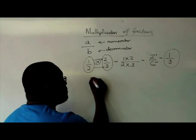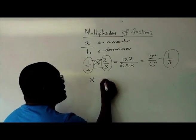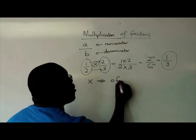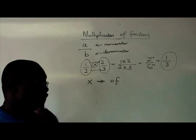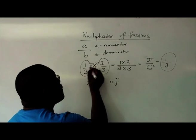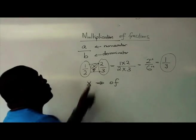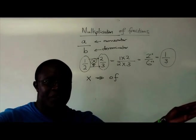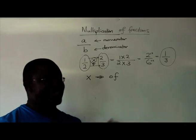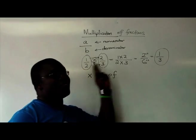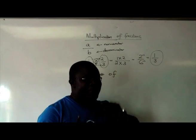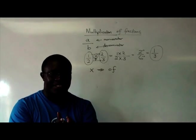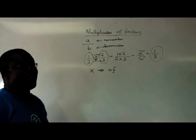Because in mathematics, multiplication is read as of. So this is 1 half of 2 thirds, which is 1 third. Because 1 third plus 1 third is going to give you 2 thirds. You can actually prove the fact that your answer is correct because we know that 1 third plus 1 third equals 2 thirds. So that's how you multiply fractions.